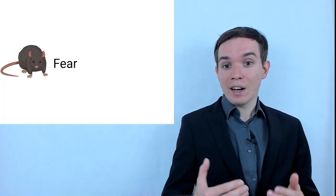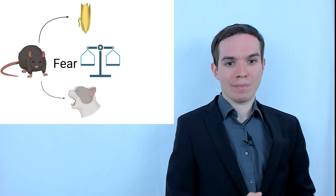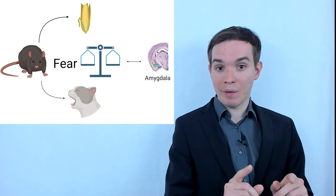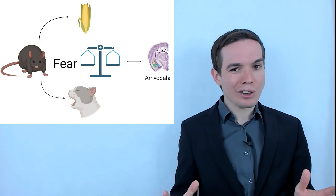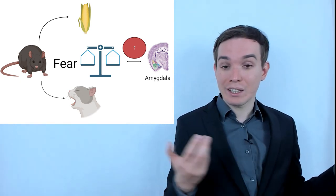In natural environments, foragers, for instance mice and rats, constantly face the risk of encountering predators. Fear is a defensive mechanism evolved to protect animals from danger by balancing their needs for primary resources with the risk of predation. Amygdala is a brain region implicated in mediating fear responses. However, the functions of fear and amygdala in foraging behavior are not well characterized because of technical difficulties in quantifying prey-predator interactions.